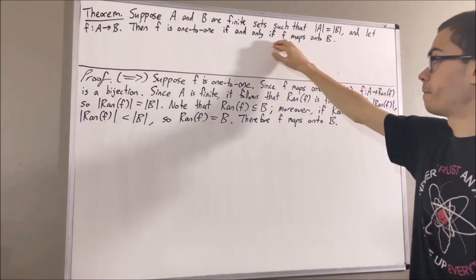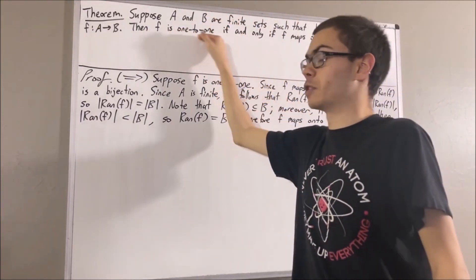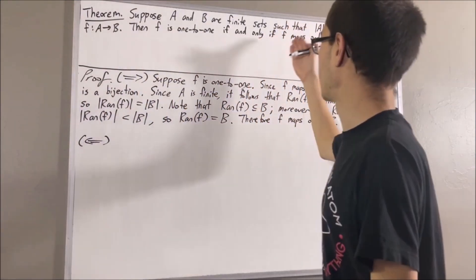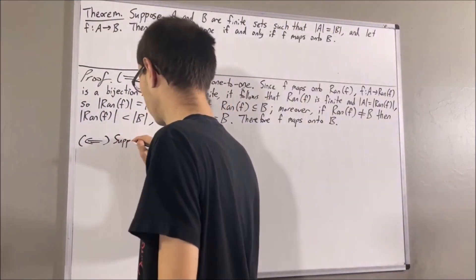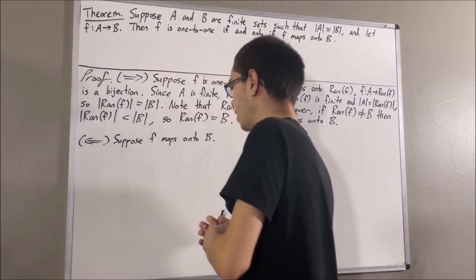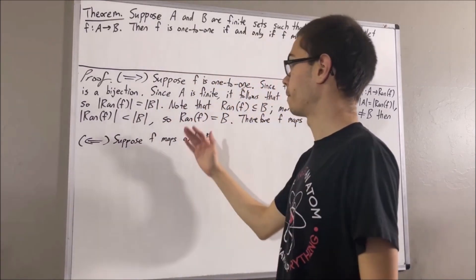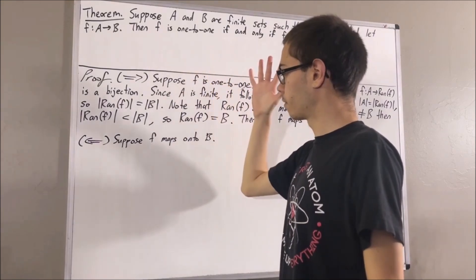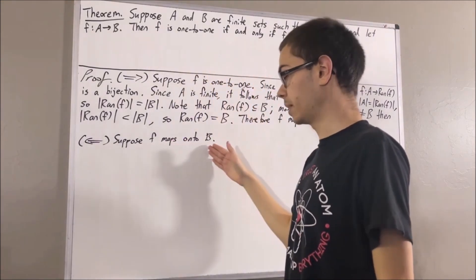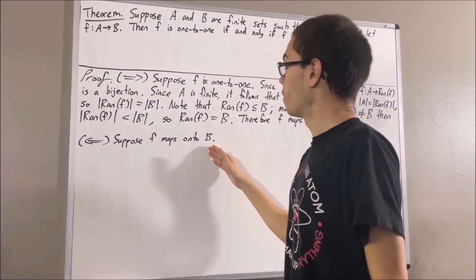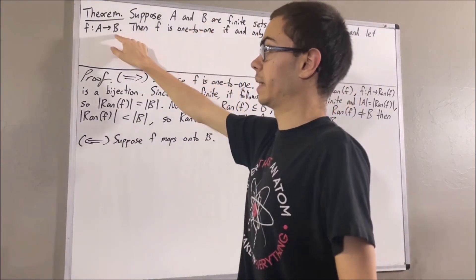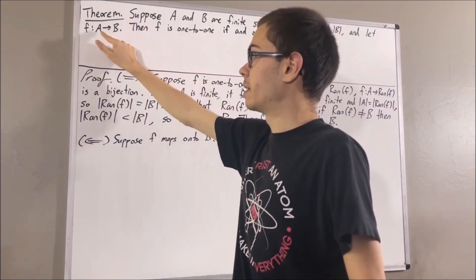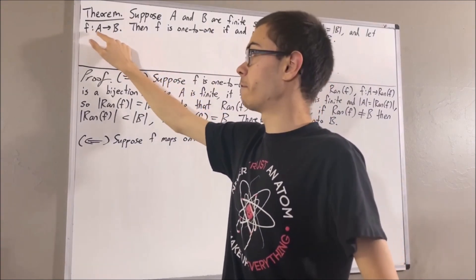Now let's prove: if F maps onto B, then F is one-to-one. To do so, let's suppose that F maps onto B. The whole goal from here is to prove that F is one-to-one. Since F maps onto B, what this means is for every element b in B, there exists an element a in A such that F of a is equal to b.